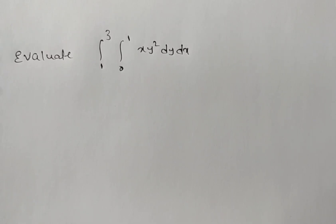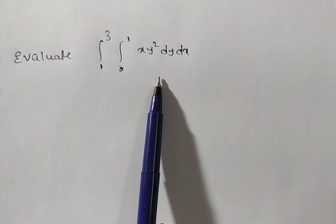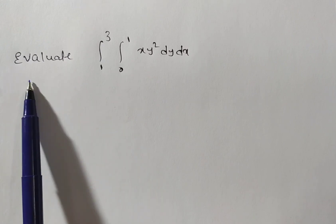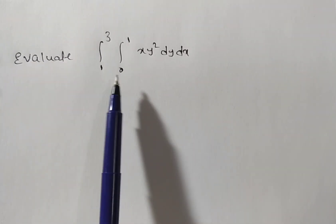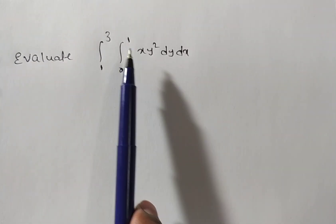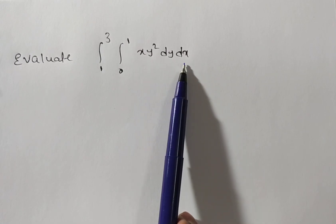Friends, here we are solving a double integral problem. The given problem is: evaluate the integral from 1 to 3, integral from 0 to 1, of x y squared, dy dx.